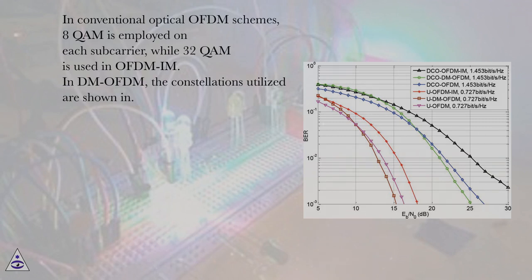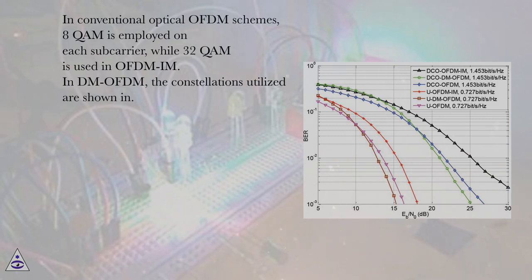In conventional optical OFDM schemes, 8-QAM is employed on each subcarrier, while 32-QAM is used in OFDM. In DM-OFDM, the constellations utilized are shown in the figure.